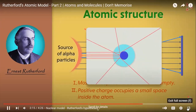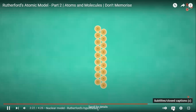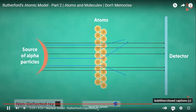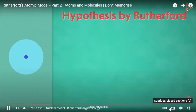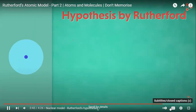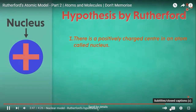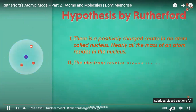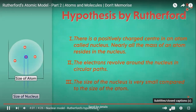If the space occupied by the positive center were big, the number of alpha particles bouncing back would also be greater. Most rays pass straight through, a few change path and get deflected, and very few particles bounce back. These results compelled Rutherford to come up with a new nuclear model. Firstly, there is a positively charged center in an atom called the nucleus, and nearly all the mass of an atom resides in the nucleus. Secondly, electrons revolve around the nucleus in circular paths. Thirdly, the size of the nucleus is very small compared to the size of an atom.